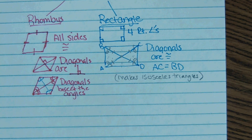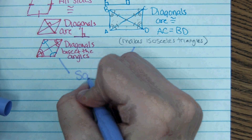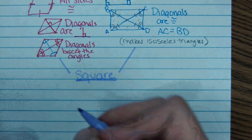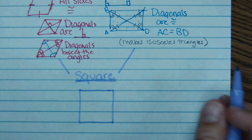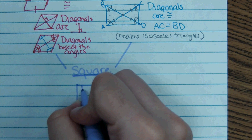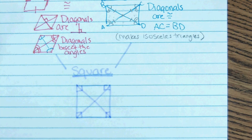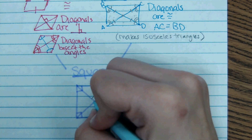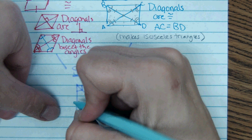Now, the siblings rhombus and rectangle had a baby called a square. A square follows all the rules of a parallelogram, rhombus, and rectangle — it's the most perfect of shapes. It has four 90-degree angles, the diagonals make a 90-degree angle with each other, the diagonals bisect each other and are all congruent, and all the sides are the same measure, just like a rhombus.